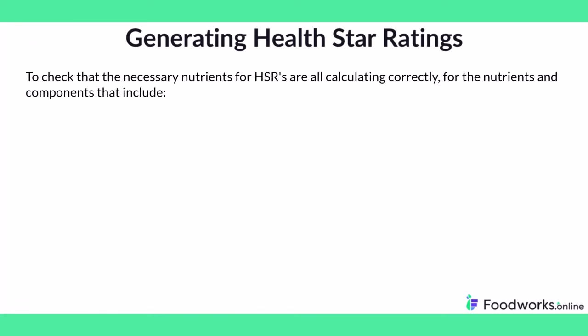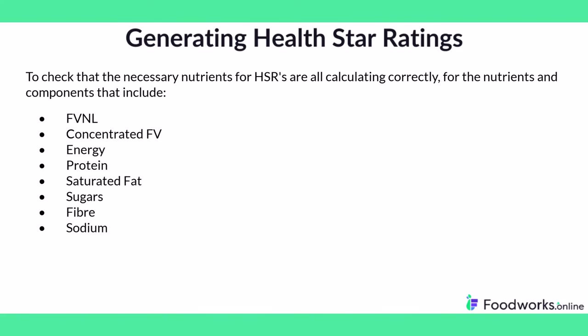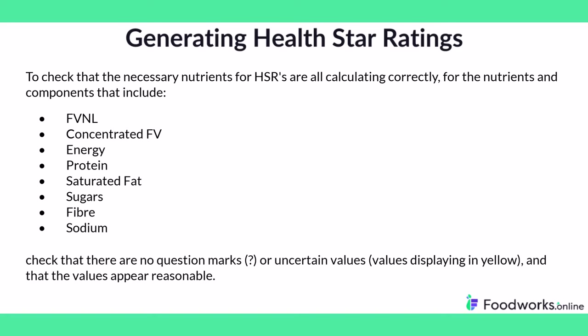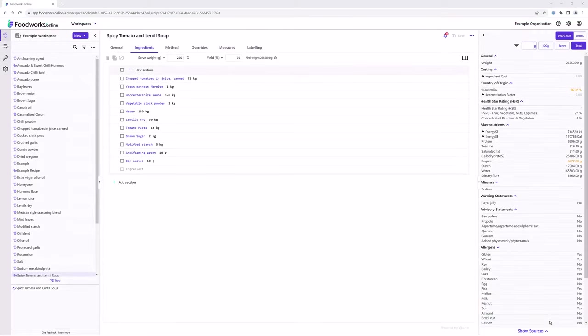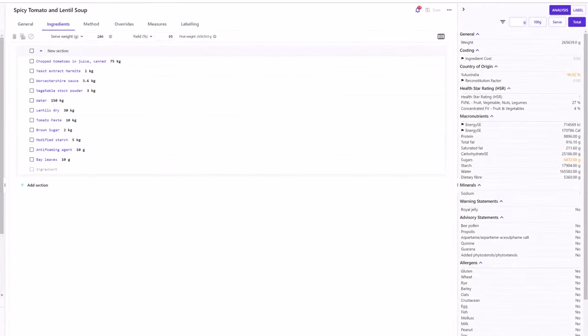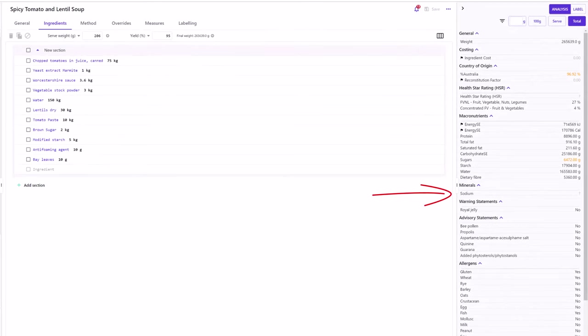To check that the necessary nutrients for HSRs are all calculated correctly, for the nutrients and components that include FVNL, concentrated FV, energy, protein, saturated fat, sugars, fibre, and sodium, check that there are no question marks or uncertain values, which are values displaying in yellow, and that the values appear reasonable. If there is a question mark for one of the nutrients — for example, in my recipe you can see that sodium has a question mark — this means that the final sodium value cannot be calculated due to missing values in all of the raw materials in this recipe.